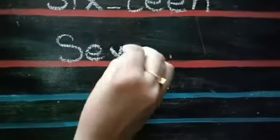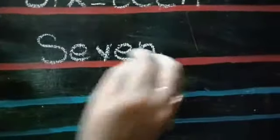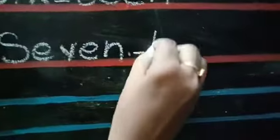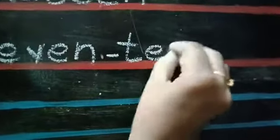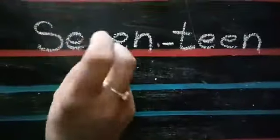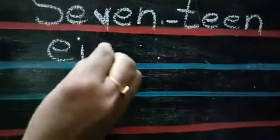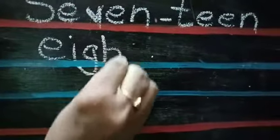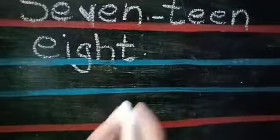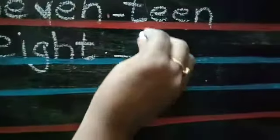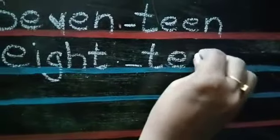Seventeen. S-E-V-E-N is seven spelling. Now, eighteen spelling. E-I-G-H-T. Eight. Teen. T-E-E-N. Eighteen.